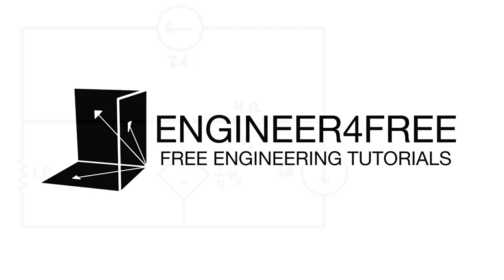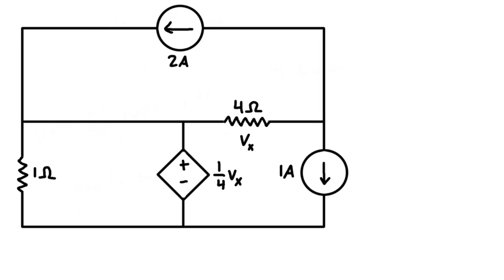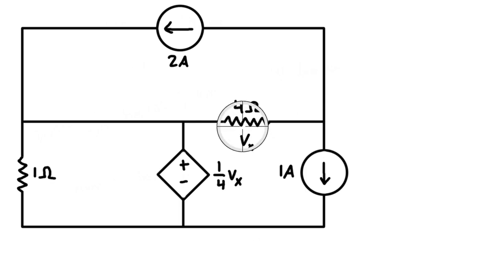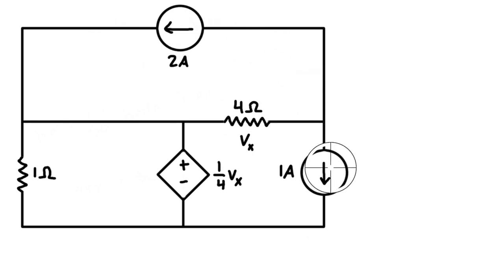Welcome back. We're looking at an example of a voltage controlled voltage source, which is a dependent power source. We want to figure out the voltage drops across each element, the power dissipation in the resistors, and the power delivery through the power sources. We have one dependent power source, two independent current sources, and we'll be applying Kirchhoff's current law, Kirchhoff's voltage law, and Ohm's law throughout.